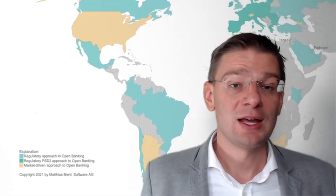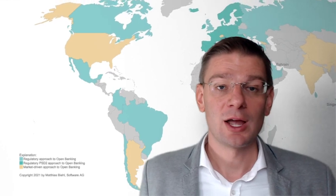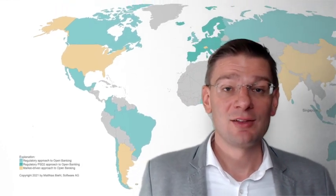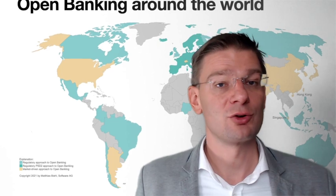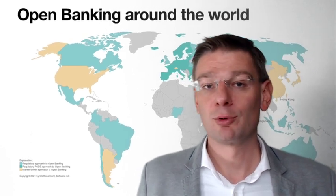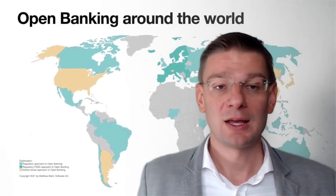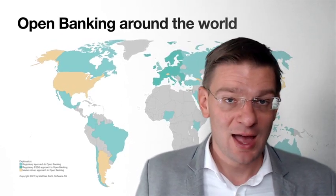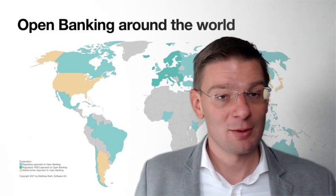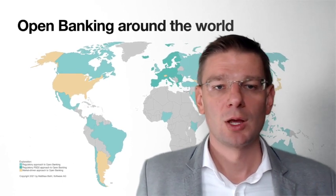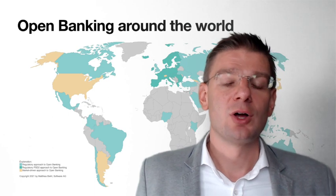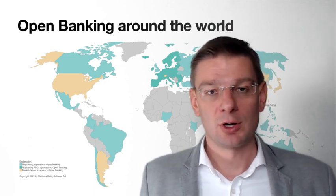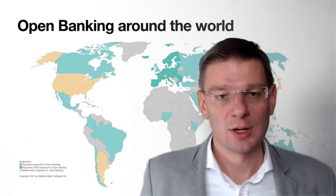You will also see yellow areas. The yellow areas are areas where open banking is present but it is not regulated — there is no law for open banking. It is happening and is market driven. And then you see gray areas where open banking is not a main topic or not a big concern yet.